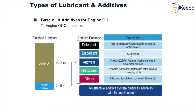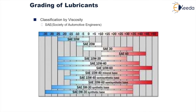Other additive packages might serve the purpose of providing anti-foams, demulsifiers, and corrosion inhibitors. An effective additive system balances additives with the application. Now, classification of lubricant by viscosity — one way to classify is the SAE classification, which stands for Society of Automotive Engineers. The different grades of oil are SAE 10W, SAE 20W, SAE 30, SAE 40, SAE 10W-30, 10W-40, 10W-60, and so on.